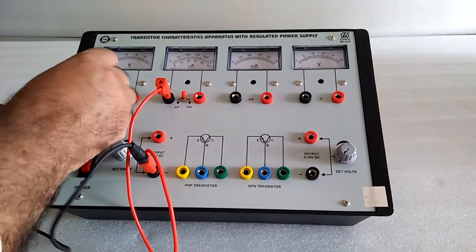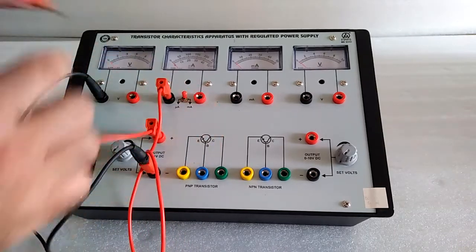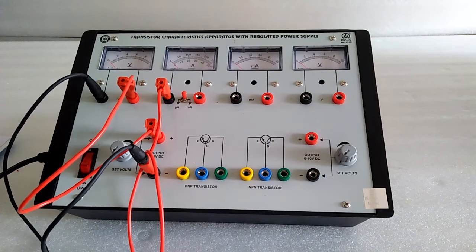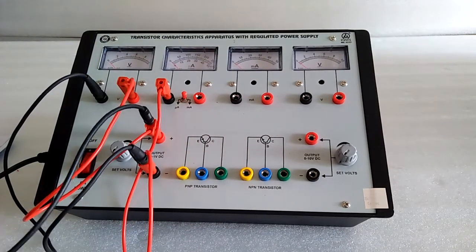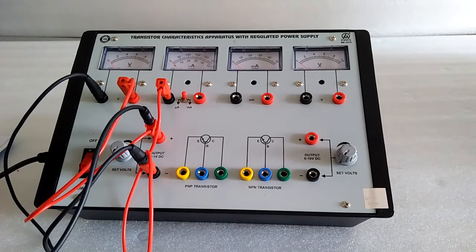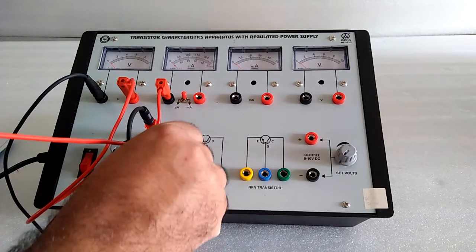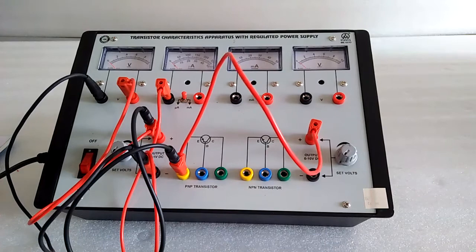That is the gain as we go into the current terminal. We are doing common emitter PNP. The emitter is common with respect to the supply.